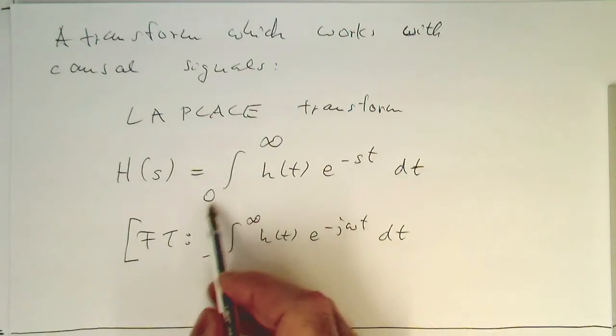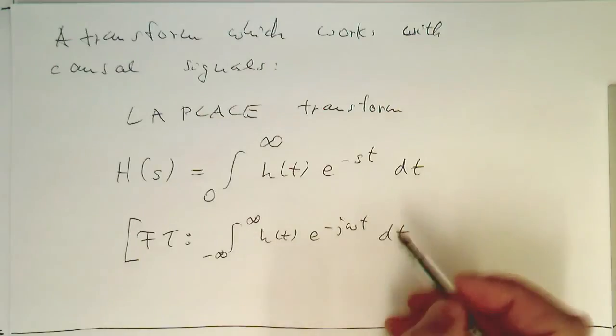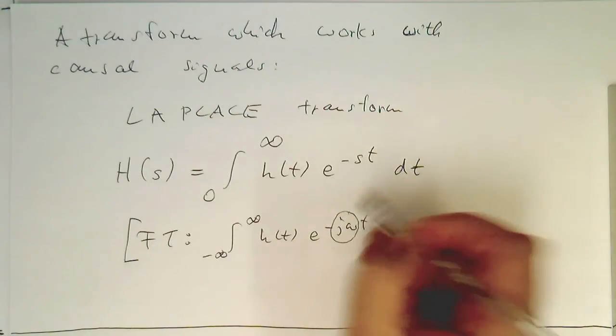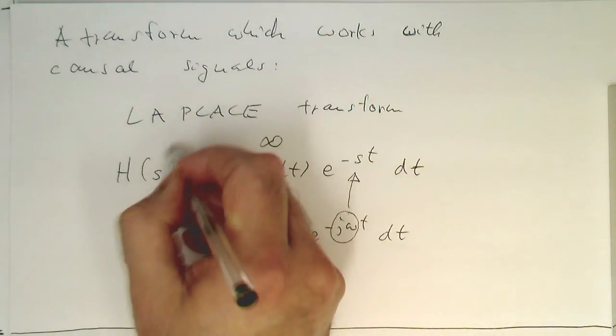So the integration only runs from 0 to infinity. And the other interesting thing is, this j omega is replaced by this s term. So s can be any complex number.